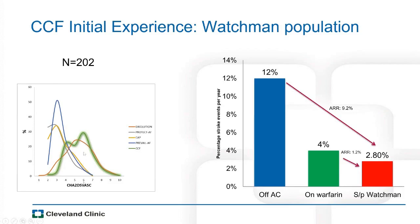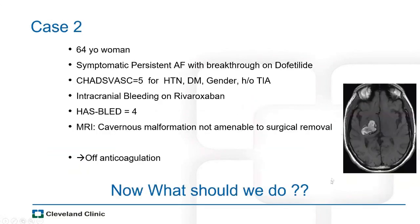In our high-risk population, follow-up showed a stroke risk of only 2.8% at one year — far better than the expected 12% for similar patients without anticoagulation, and better than the approximately 4% per year historically reported on warfarin. This clearly demonstrates that the Watchman device is a helpful and good alternative for patients with contraindications to long-term oral anticoagulation.